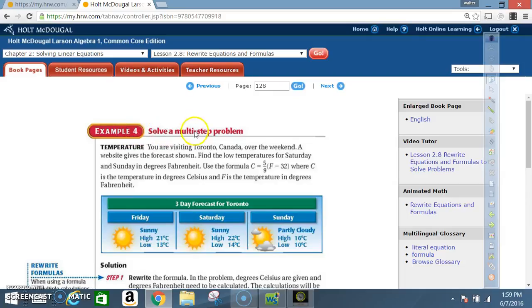Example 4. Solve a multi-step problem. Temperature. You are visiting Toronto, Canada over the weekend. A website gives the forecast shown. Find the low temperature for Saturday and Sunday in degrees Fahrenheit.